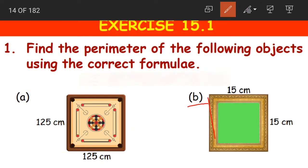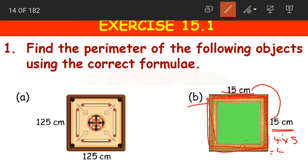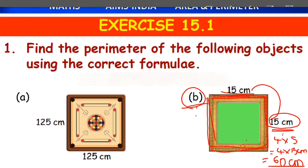Coming to question B. We are having a frame and the length of the sides given is 15 cm. This is also in the shape of a square. So the formula is 4 into S, that is 4 into 15 cm. 4 fifteens are 60. So 60 cm is the perimeter of this second figure.